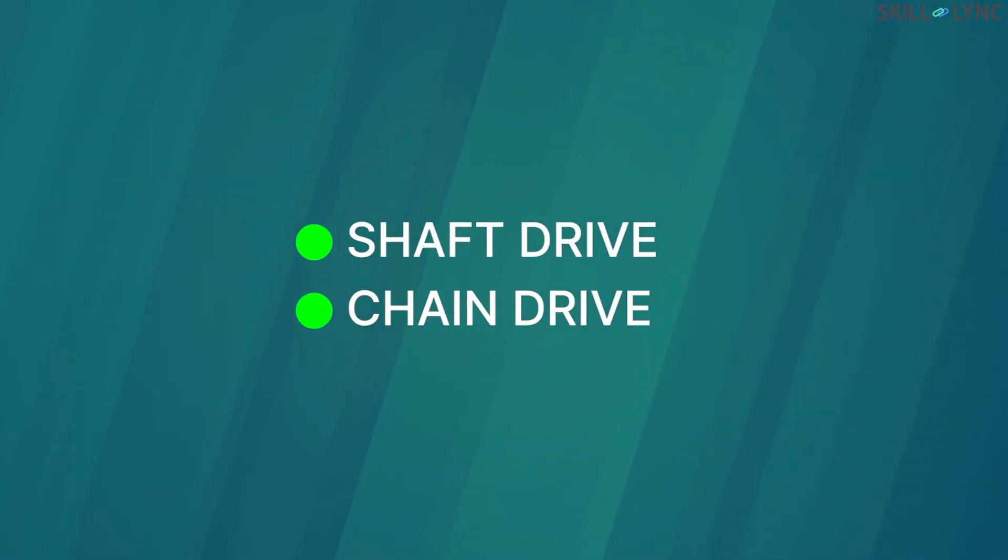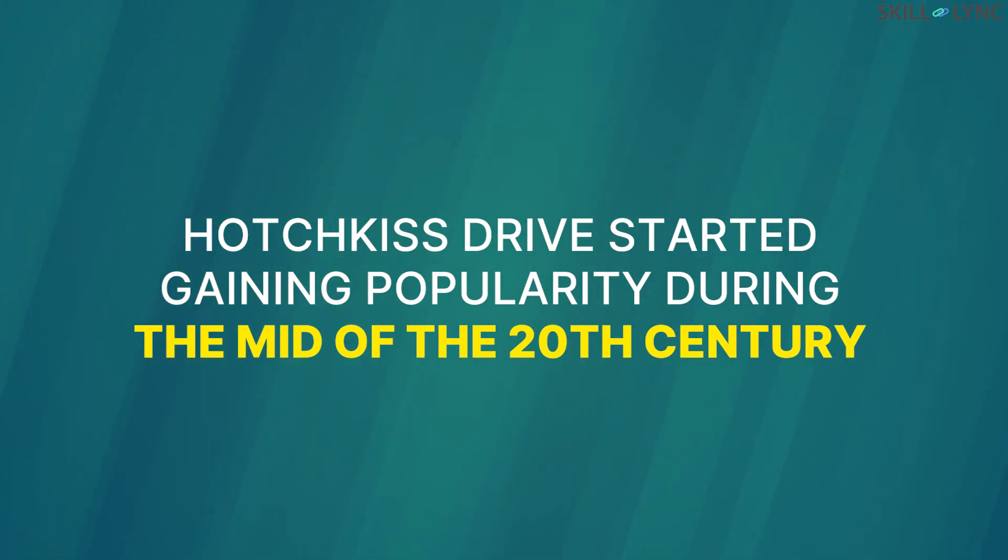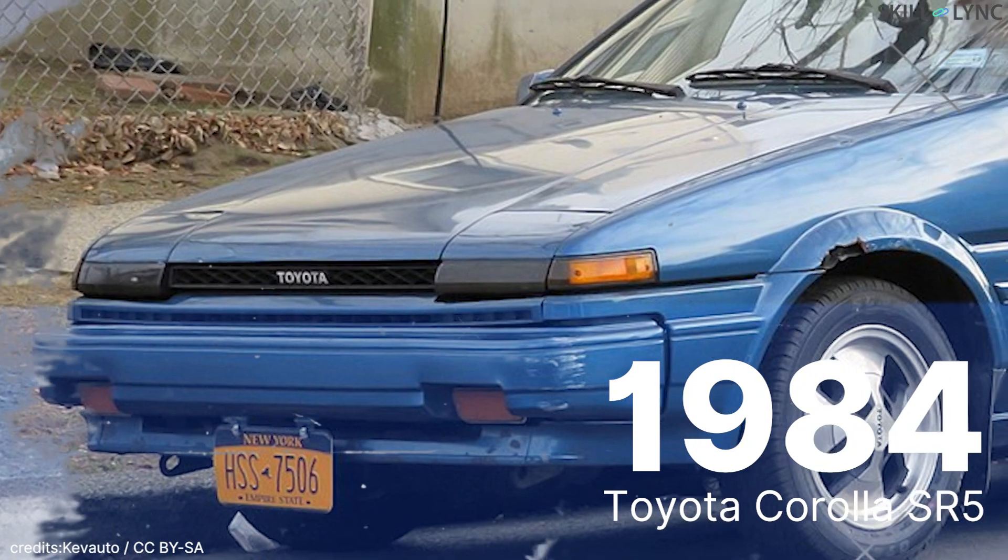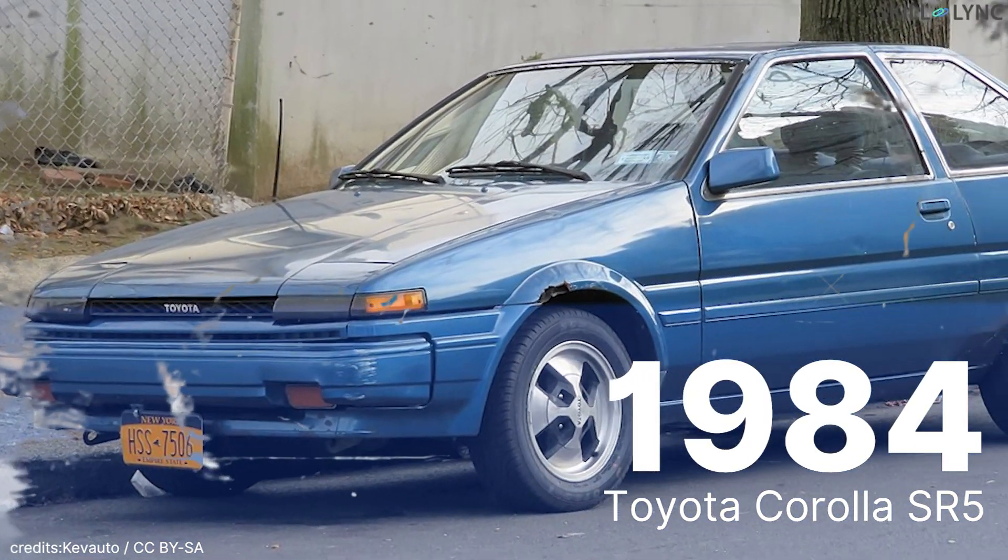But during the mid-20th century, the Hotchkiss drive replaced the shaft drive and chain drive and started gaining popularity. One such example is the 1984 Toyota Corolla SR5, a front engine rear-wheel drive car that has the Hotchkiss transmission.